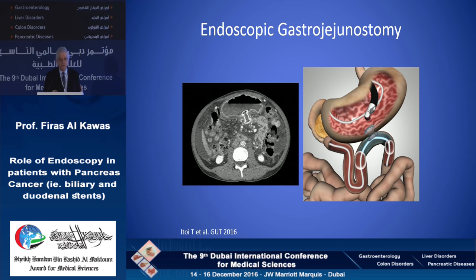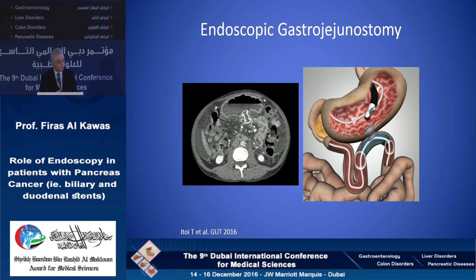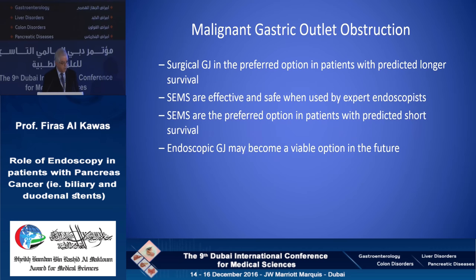A variety of endoscopic EUS-guided gastrojejunostomy methods have been introduced that may change this approach. One example uses a short self-expandable Axios stent to create the gastrojejunostomy. There are also other methods, such as using magnets. These techniques may play a larger role once they become more mature in the management of these patients.